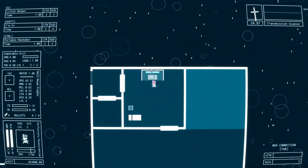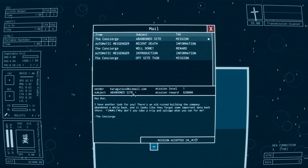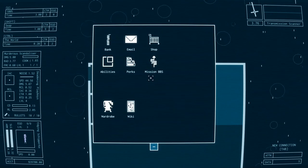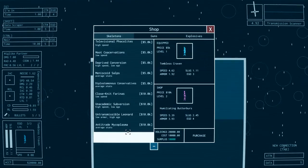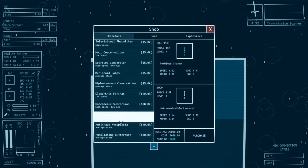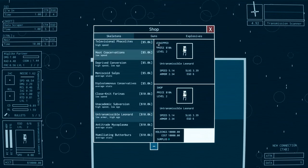The gameplay loop of DDS has your starting character use their apartment's computer to check emails for new story-related missions, or select from an endlessly generated series of contracts. Despite debt repayments, money can be spent at the store buying new weapons, body types, and explosives.